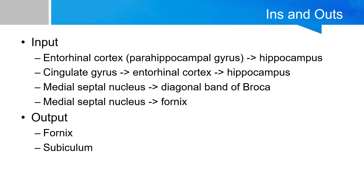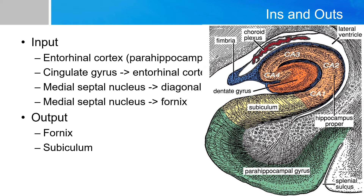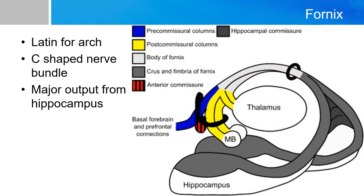In terms of output, it is rather simple — you can only go one of two ways. You can either go to the fornix, or you can go through the cortex via the subiculum into the entorhinal cortex. The fornix is a C-shaped nerve bundle that starts in the hippocampus, travels around forming almost an arch — hence its name, fornix, Latin for arch — and ends in the mammillary body. This structure is the major output of the hippocampus.